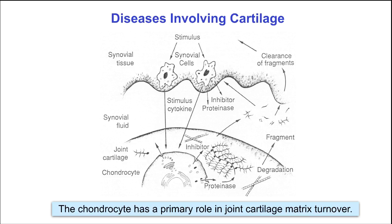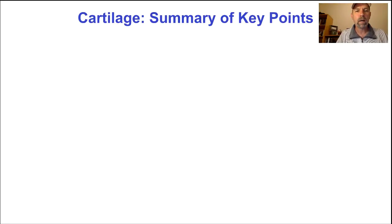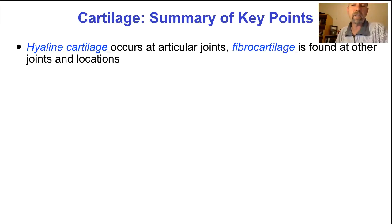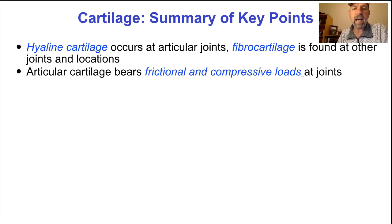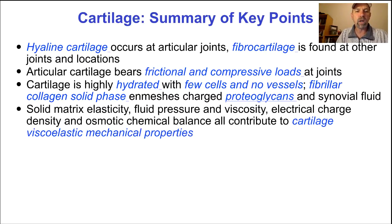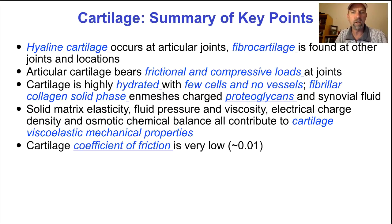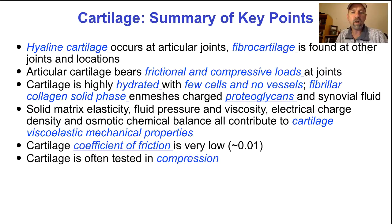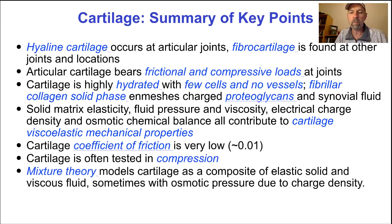Modern research on cartilage is especially focused on how chondrocytes and other cell types maintain the tissue and how these processes are dysregulated by abnormal mechanical loading and inflammation. In summary: hyaline cartilage occurs at articular joints; fibrocartilage is found at other joints and locations; articular cartilage bears frictional and compressive loads; cartilage is highly hydrated with few cells and no vessels; the fibrillar collagen solid phase enmeshes charged proteoglycans and synovial fluid; solid matrix elasticity, fluid pressure and viscosity, electrical charge density, and osmotic chemical balance all contribute to the viscoelastic mechanical properties of cartilage; the cartilage coefficient of friction is very low, 0.01 or less; mixture theory models cartilage as a composite of elastic solid and viscous fluid, sometimes with osmotic pressure due to charge density; and osteoarthritis and rheumatoid arthritis lead to joint degeneration.